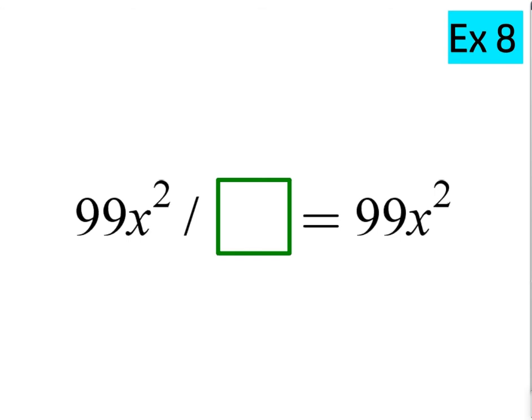Example 8. Same thing for this one. 99X squared divided by what gives you 99X squared? So, what number goes in here? Well, if I ended up with the same number, I must have divided by 1, right?